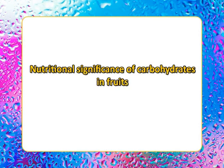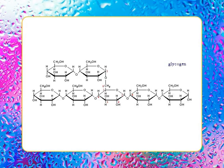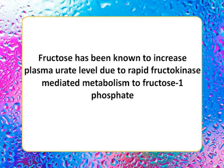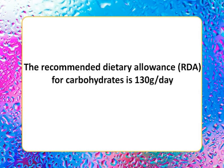Carbohydrates in fruits are the main sources of energy in the human diet. Energy derived from carbohydrate metabolism may be used directly to cover immediate energy needs or be transferred into energy deposits in the body in the form of glycogen. Carbohydrates also have regulatory functions in the human body. Fructose is known to increase plasma urate levels due to rapid fructokinase-mediated metabolism to fructose-1-phosphate. The recommended dietary allowance for carbohydrates is 130 grams per day, except in pregnancy where it is 175 grams per day and during lactation it is 210 grams per day.